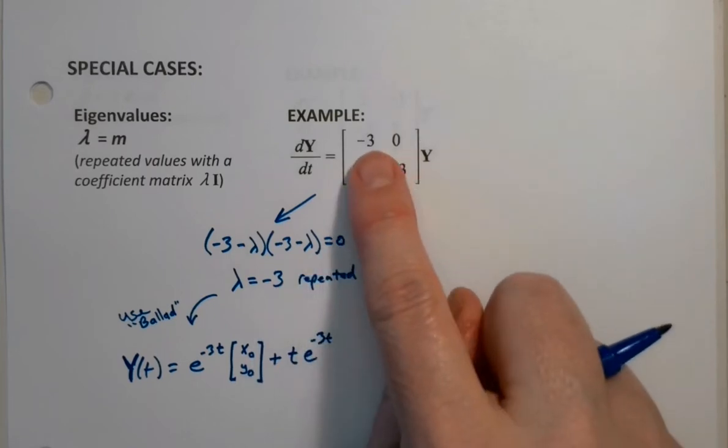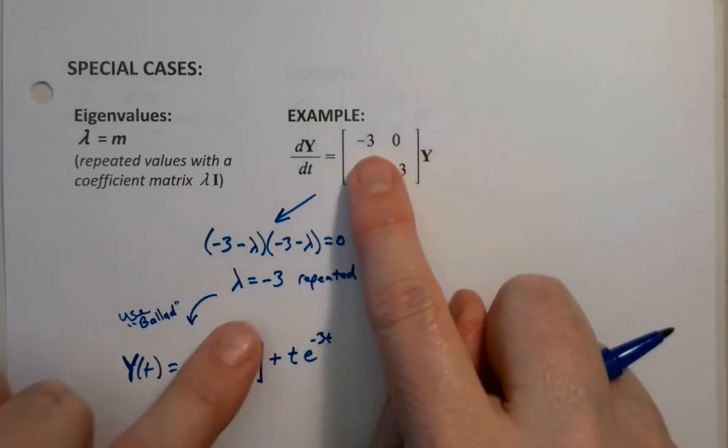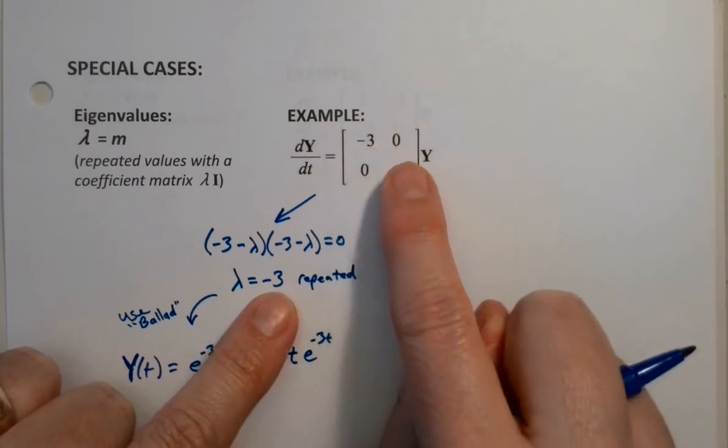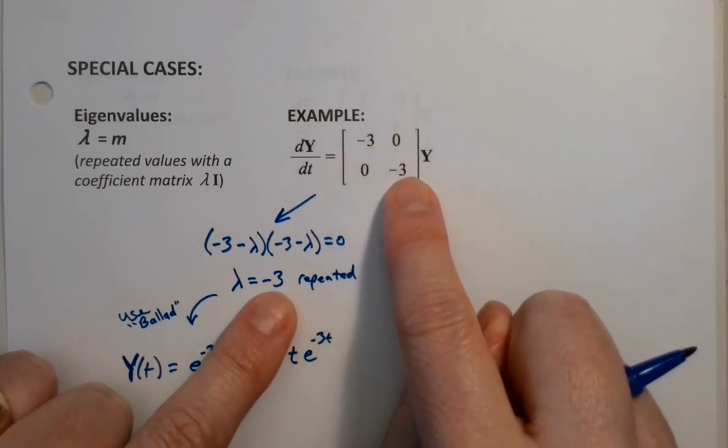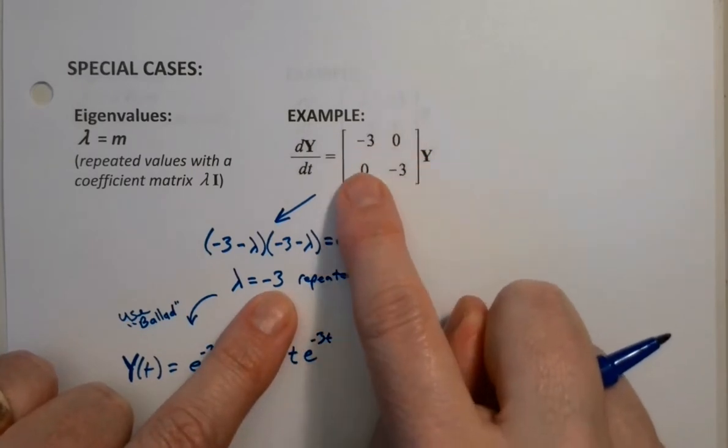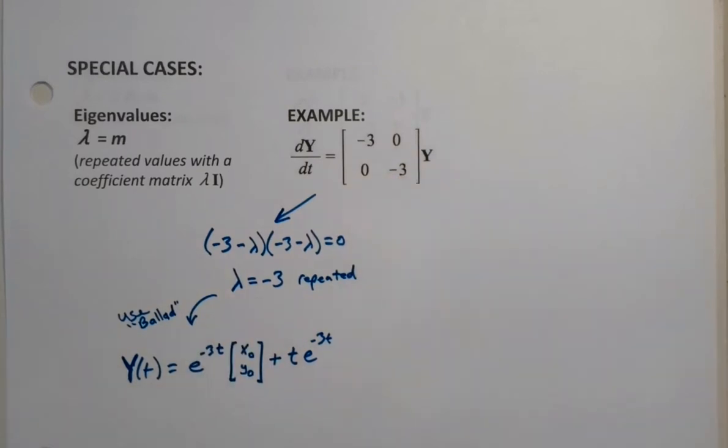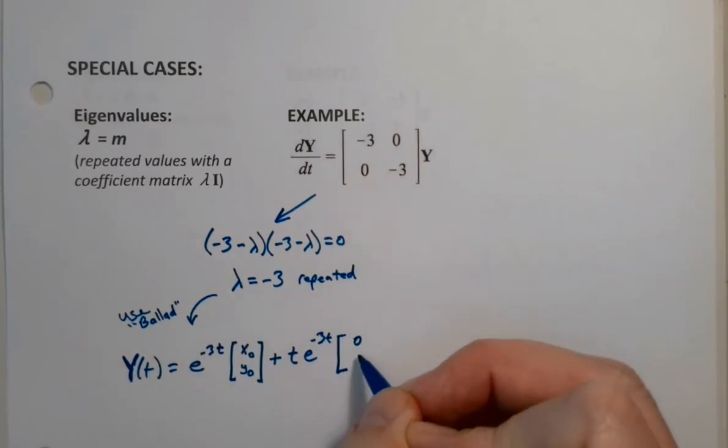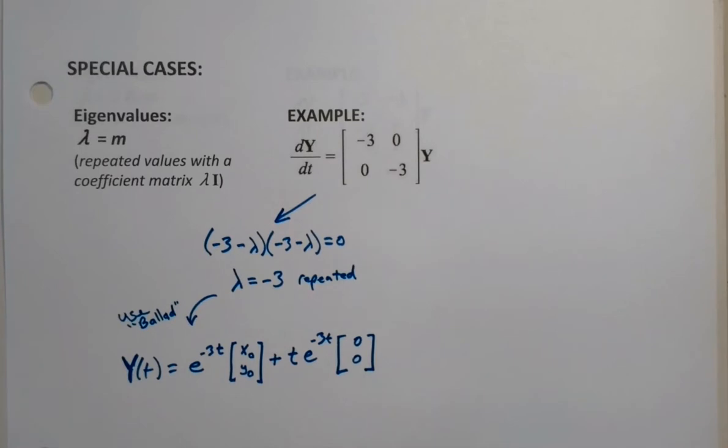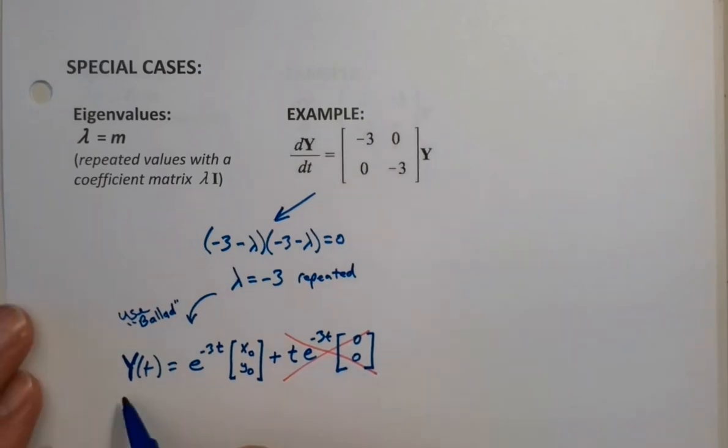plus t times e to the negative 3t times my modified coefficient matrix with my eigenvalue in there. But if you notice, if I modify this thing with the eigenvalue, we wind up with zero here and zero here. So zero, zero, zero, zero, the whole thing is just zero. It would be times zeros. So it's as if that second term just kind of disappears. This whole second term just goes away. And all we're left with for our general solution for this system is that.